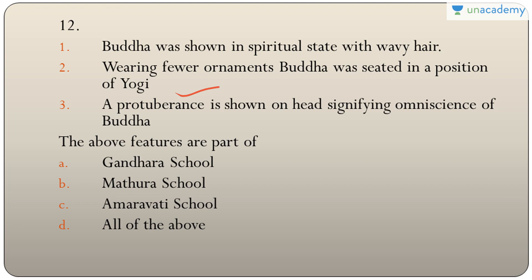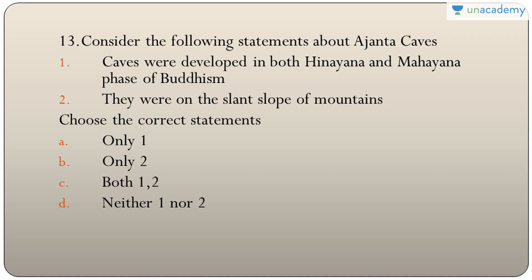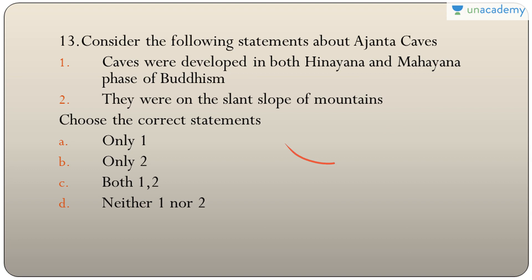Question thirteen: statements about Ajanta caves — they were developed in both Hinayana and Mahayana phases of Buddhism, and were on the slant slope of mountains. The first is correct, but they were on a stiff slope, not a slant slope — Ellora caves are on the slant slope, which is why Ellora has balconies. The answer is A — only one.